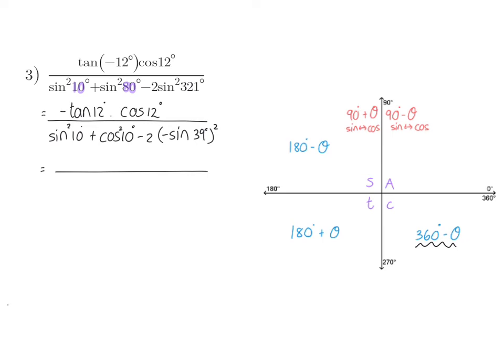So I'm going to use an identity straight away, and change tan to sin over cos, so it's going to become sin 12 over cos 12. And that I still need to multiply by cos 12 in my numerator. In my denominator, I'm going to use another identity, and that's an old identity, sin squared 10 plus cos squared 10 will be 1.